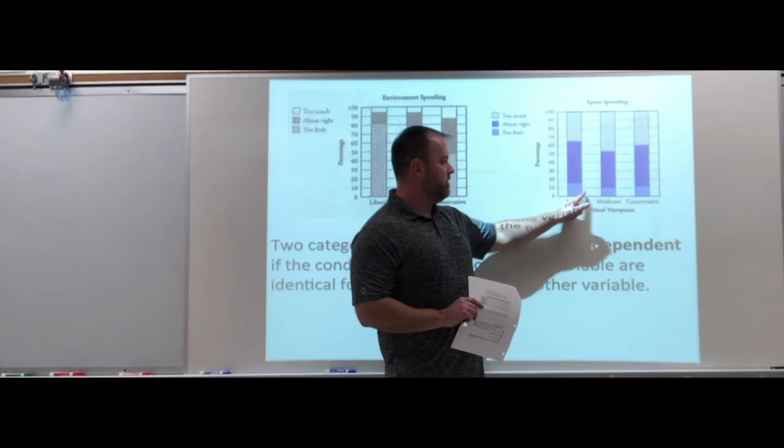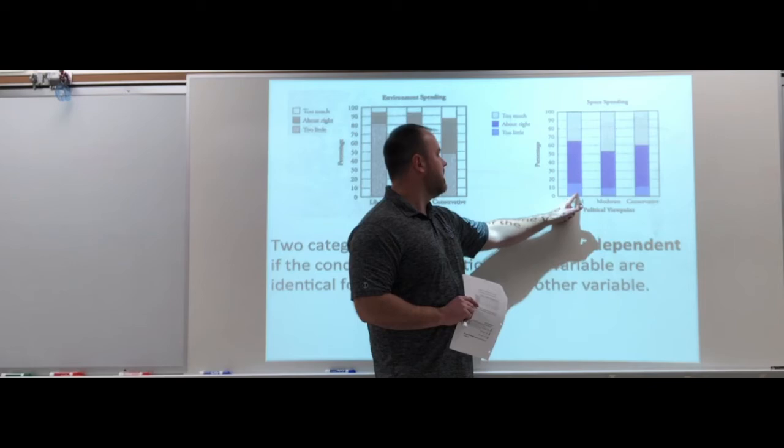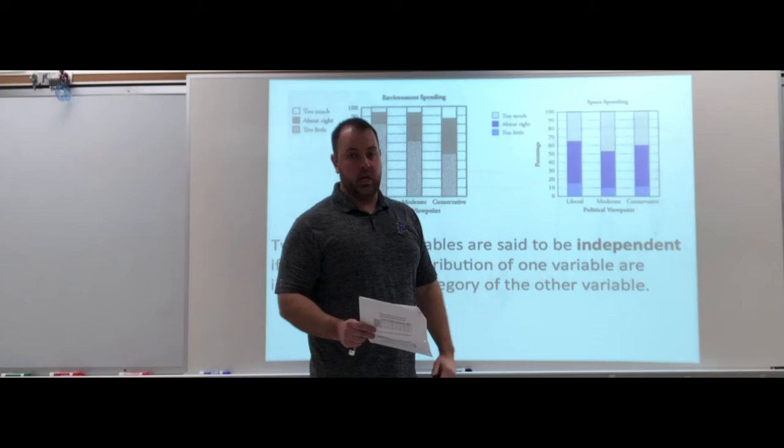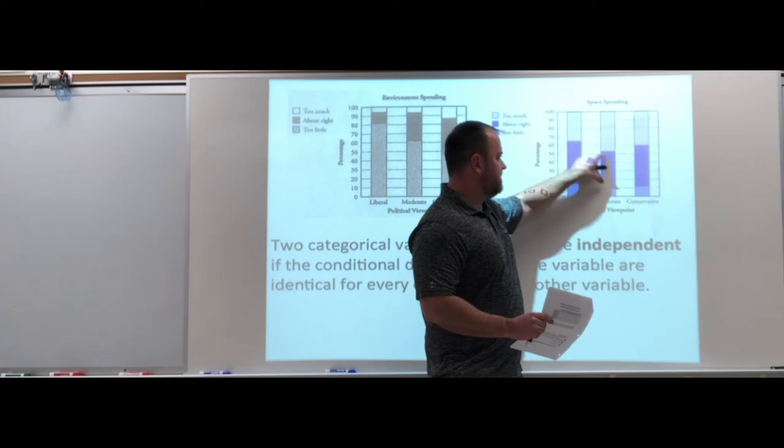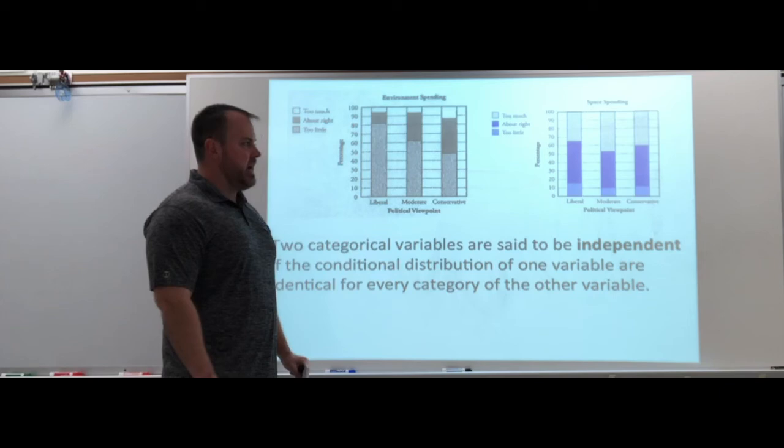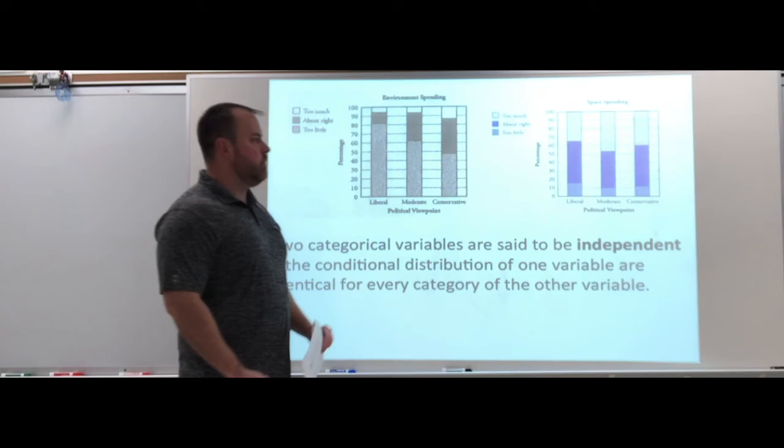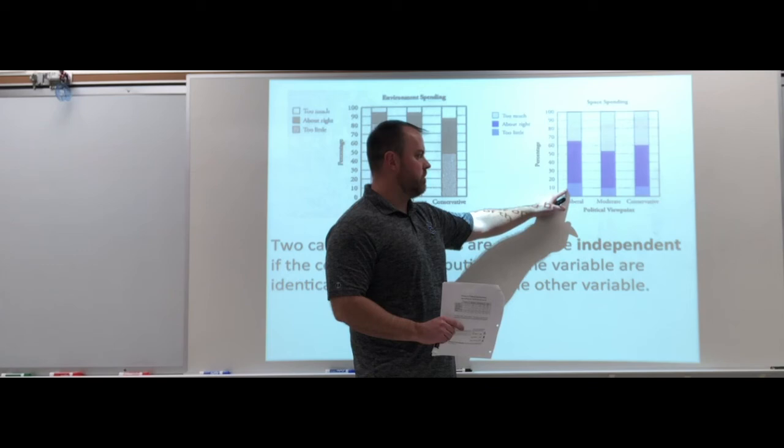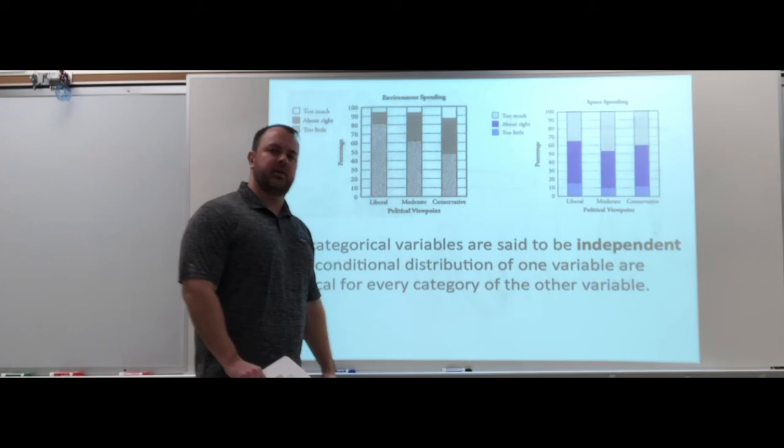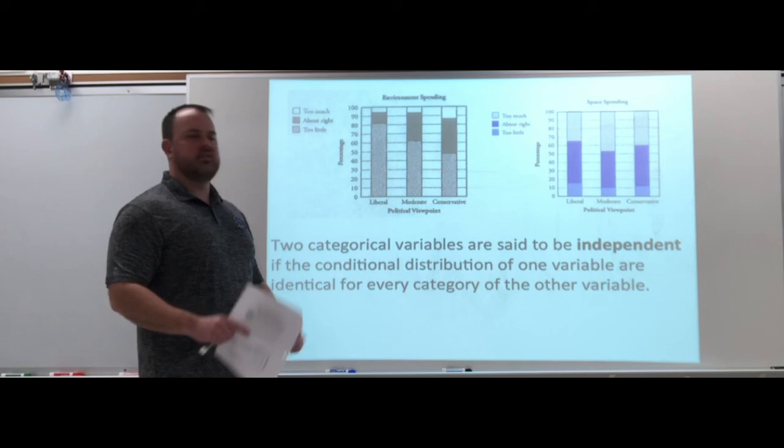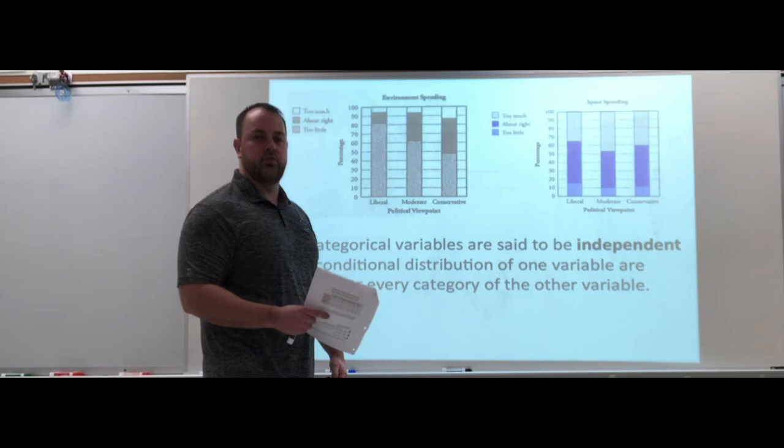Over here for political viewpoints and space spending. For the too littles, I don't really have to move that far from each other. They are pretty close to each other. Same thing for the too much, same thing for the about right. None of them are equal, they're not identical, but they are fairly similar to each other. Each section, the percentages are fairly similar. I would say that political viewpoint and spending on space, how people think the government's spending on space, those would be independent variables. They are similar enough for me to say those two variables are independent. No matter your political viewpoint, it probably doesn't have an effect on how you feel about too much, about right, or too little on government spending for space.